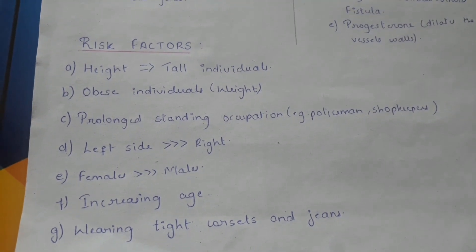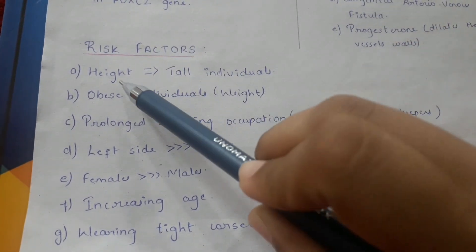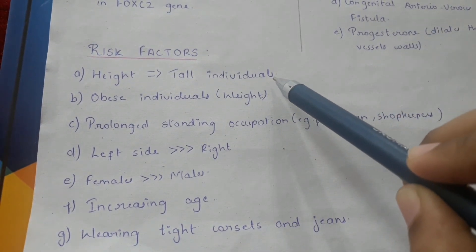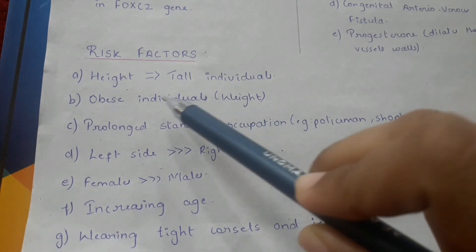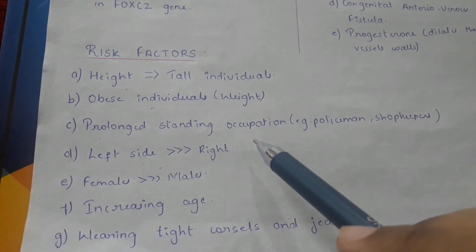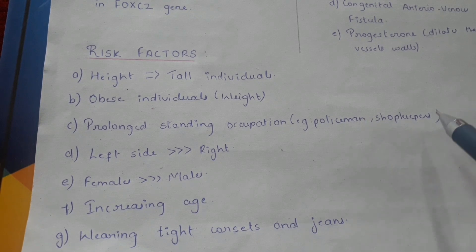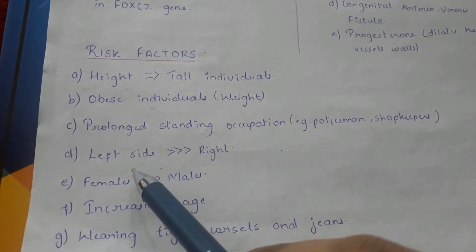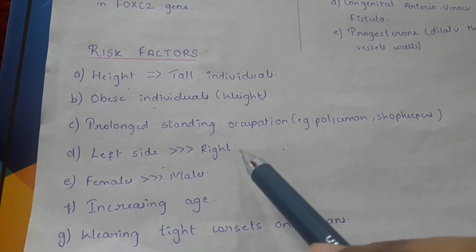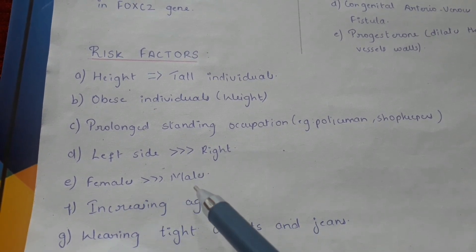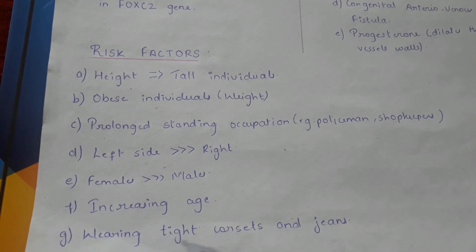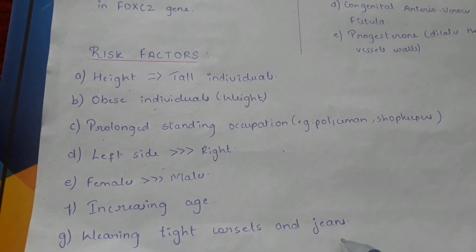Risk factors for varicose veins include height (tall individuals are predisposed), weight (obese individuals), prolonged standing occupations such as policemen and shopkeepers. The left side is more affected than the right. Females are more prone than males. Increasing age and wearing tight corsets or tight jeans are also risk factors.